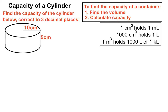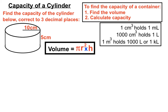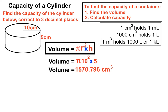Here's an example: find the capacity of a cylinder, correct to three decimal places. The cylinder has a radius of ten centimetres and a height of five centimetres. Step one is to find the volume. The volume of a cylinder is pi r squared times h. Our radius is ten and our height is five, so we calculate pi times ten squared times five. The answer is 1,570.796 centimetres cubed — we've found the volume.